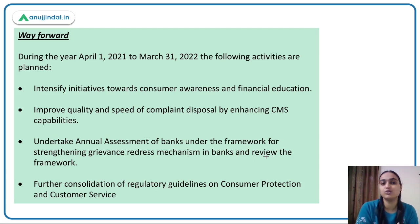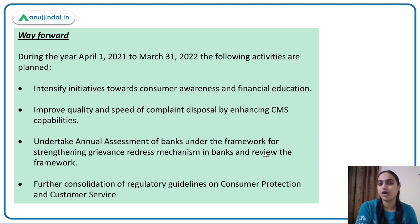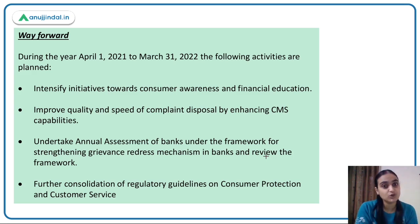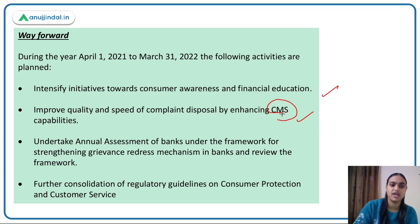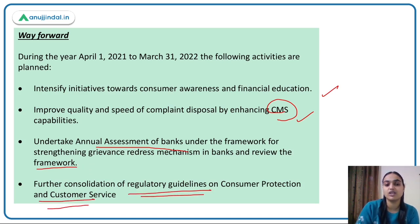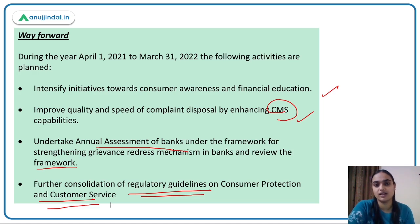Looking at the way forward, the report covers goals from April 2021 to March 2022. Objectives include intensifying consumer awareness and financial education initiatives, improving quality and speed of complaint disposal, and further consolidating regulatory guidelines on consumer protection and customer service, similar to how existing schemes were integrated.